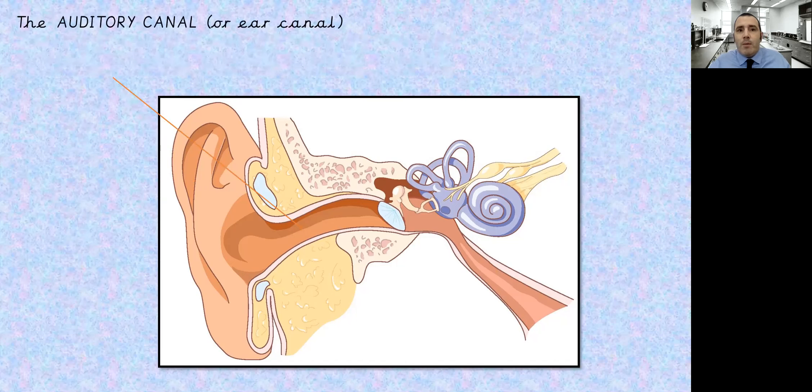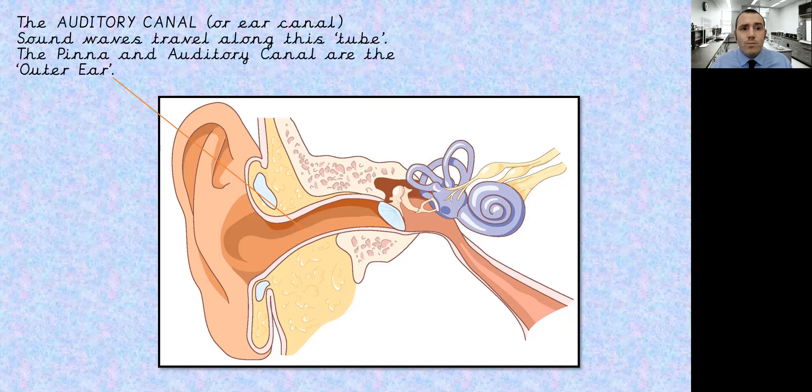So the auditory canal or the ear canal. Our sound wave has been collected by the pinna and it's now going in. It's coming in through the auditory canal. So sound waves travel along this tube, which is why it's really important we don't put things in there, because we can damage what's going on after this has gone through here. So the pinna and the auditory canal are what's referred to as the outer ear. So they're the bits that can be seen on the outside of our bodies.